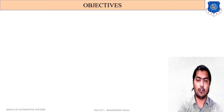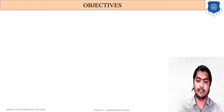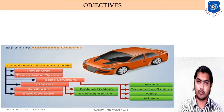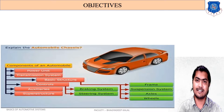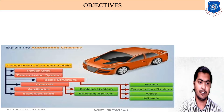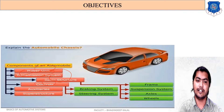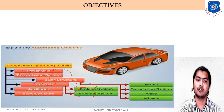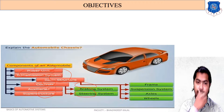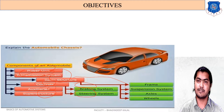Let me explain the objectives of this subject. The automobile chassis is divided into units: power units, transmission system, basic structure, and control system. Control system includes braking system and steering system, plus auxiliary and superstructure. Basic structure is further divided into frame, suspension system, axles, and wheels.